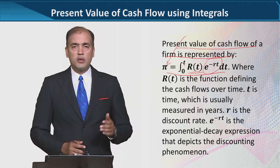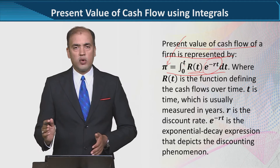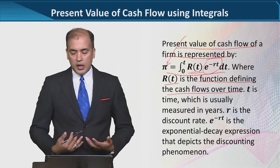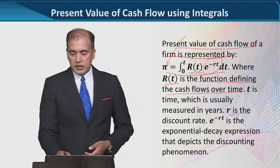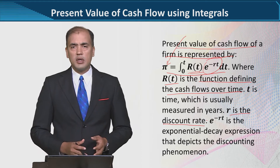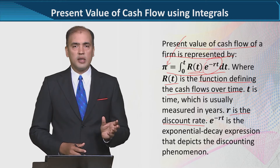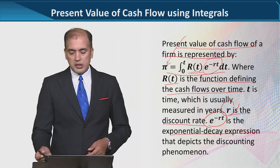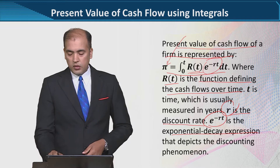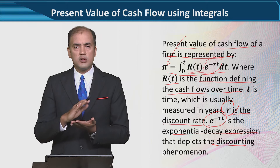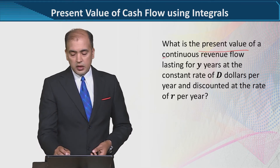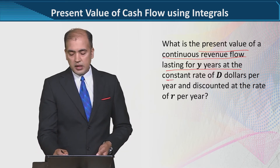It has a lower and upper limit because we are talking about a starting point of the investment and the ending point of that. This was the understanding of this formula. Here is the discount rate. You have to know that we have present value to calculate, and this is the discount rate — an exponential decay expression representing the discount rate of time value of money. The value of the continuous revenue flow lasts for Y years at a constant rate of D dollars per year, and the discount rate is R.